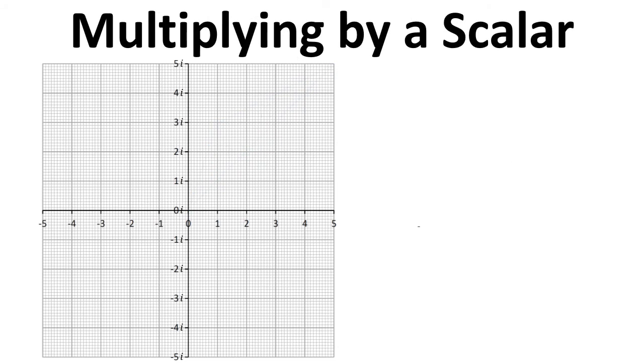We can also multiply a vector by a scalar. In this case we've got h as being 2 plus 2i, and it's shown graphically. If we multiply h by 2, then it becomes twice as large. It's still in the same direction, but its magnitude has increased.